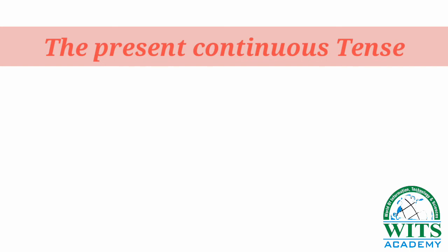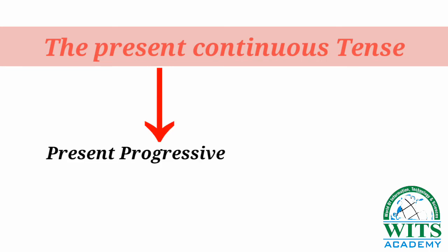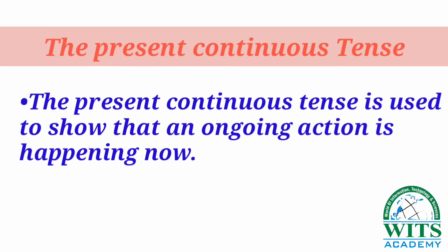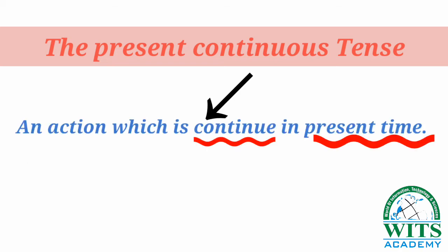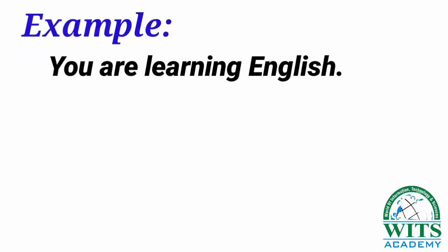Present continuous tense is also called present progressive tense. It is used to show that an ongoing action is happening now. In simple words, an action which is continuing in the present time is called present continuous tense. For example: 'You are learning English.' Here 'you' is the subject.